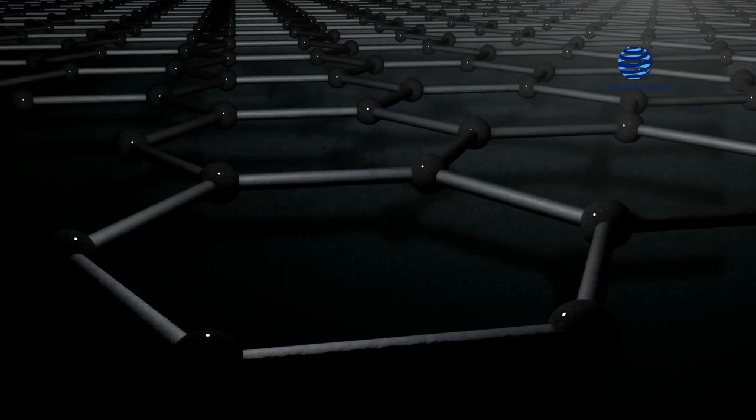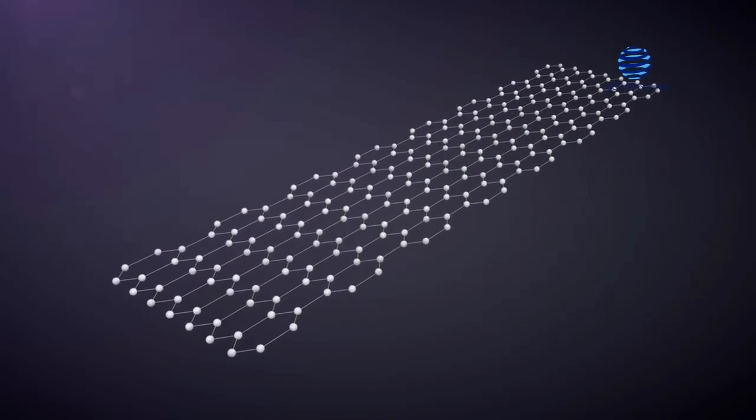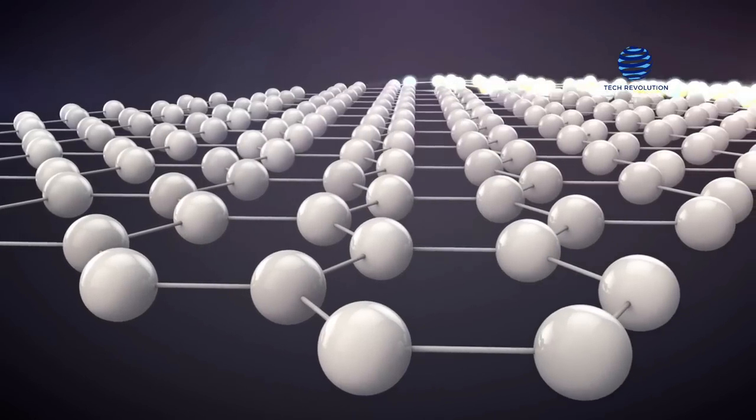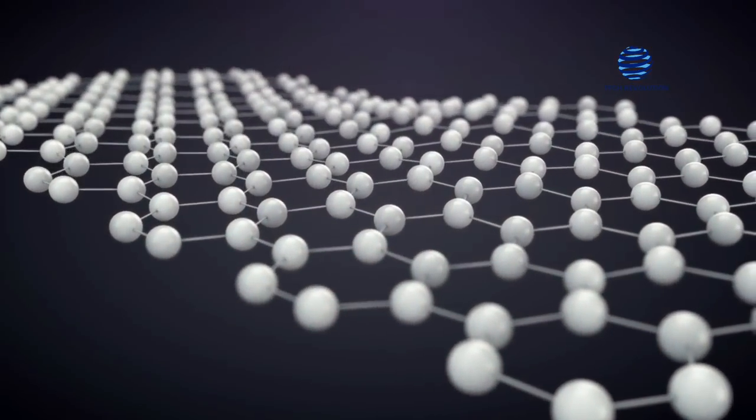However, graphene is not without its drawbacks as well. To begin with, graphene flakes as small as one micron in diameter cost more than $1,000 each, making them one of the costliest materials on the planet.